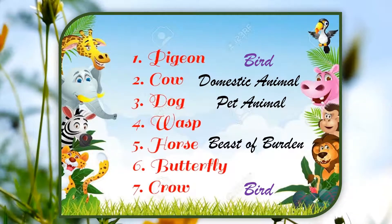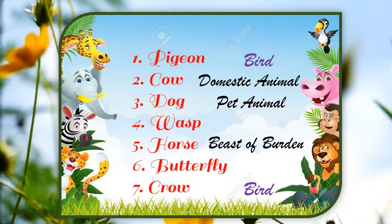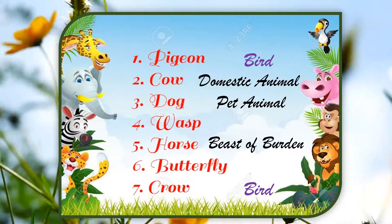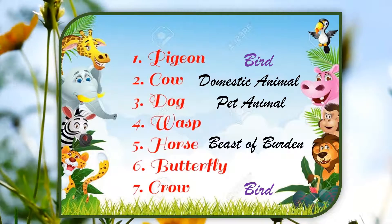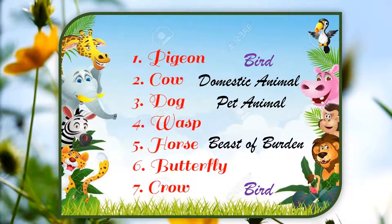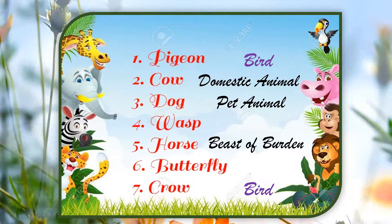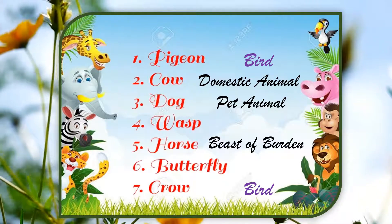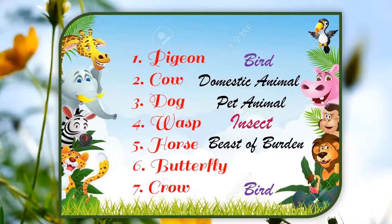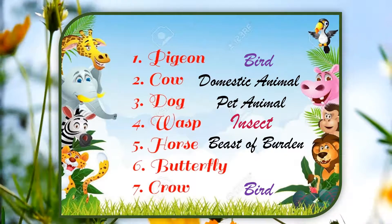Now beta, here is the list that I had prepared of the animals that I had seen in a day. And we had identified the pet animals, the domestic animals, the birds. Today we are going to identify the insects in this list. A wasp is an insect. Wasp — I told you earlier also, wasp kya hoti hain? Bheeraad.